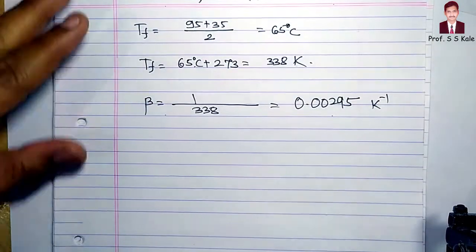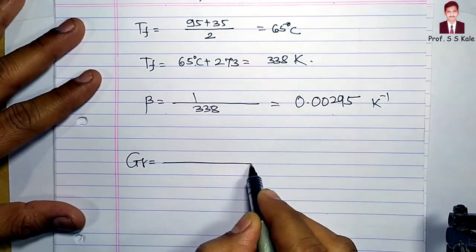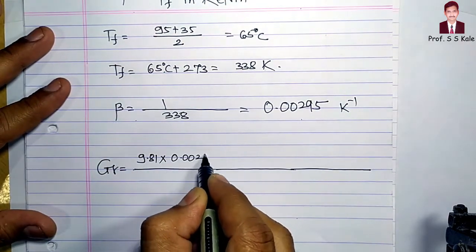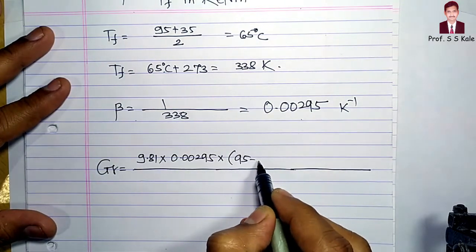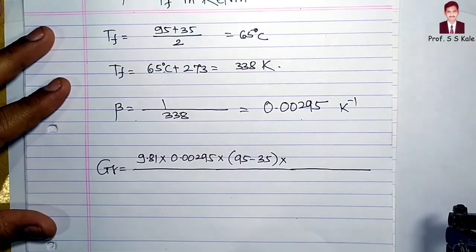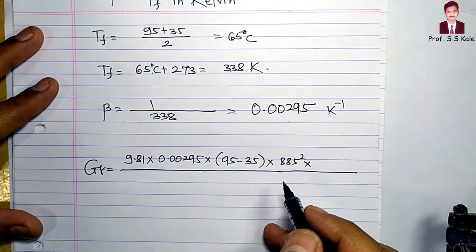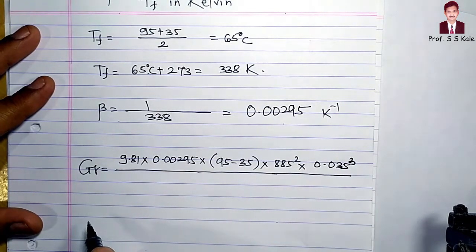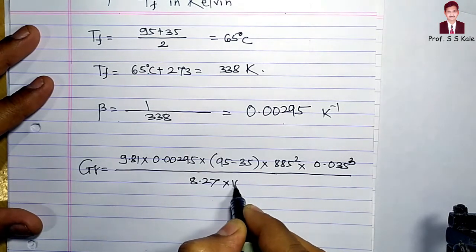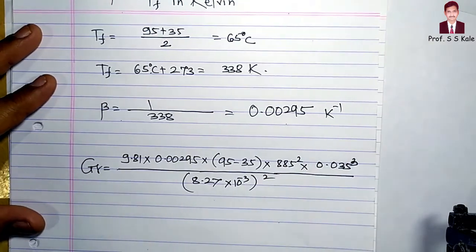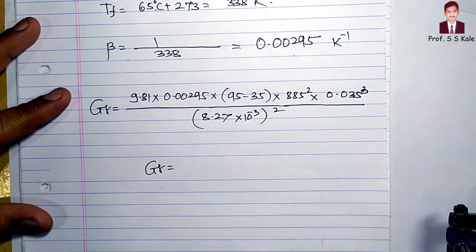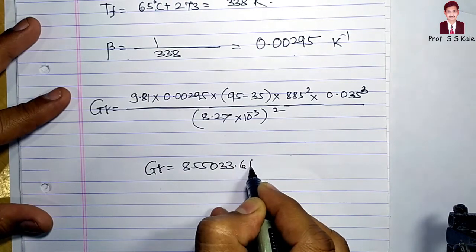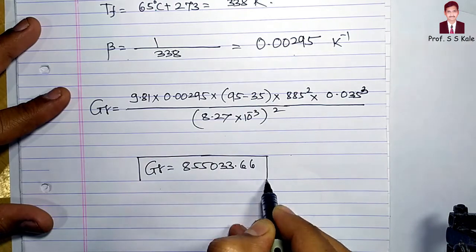Now substituting all values into the Grashof number: Gr = 9.81 × 0.00295 × (95 − 35) × 885² × 0.035³ / (8.27 × 10⁻³)². After calculation, the Grashof number comes to approximately 855033.66.